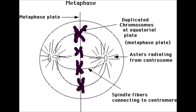Metaphase. Spindle fibers align the chromosomes along the middle of the cell nucleus. This line is referred to as the metaphase plate. This organization helps to ensure that, in the next phase, when the chromosomes are separated, each new nucleus will receive one copy of each chromosome.